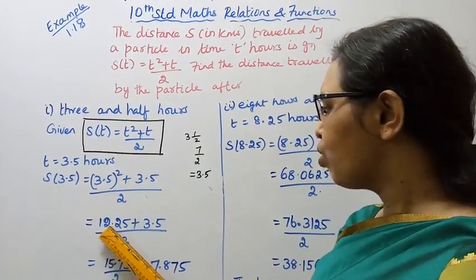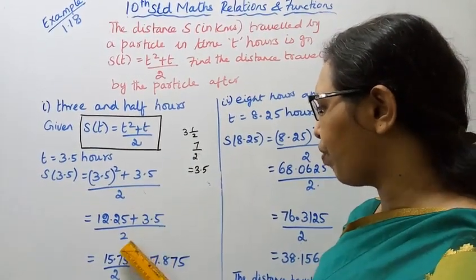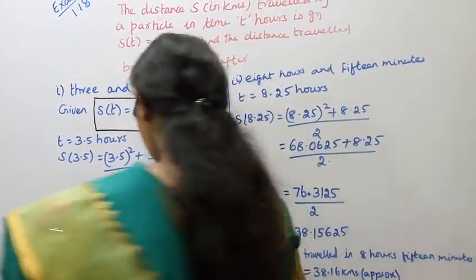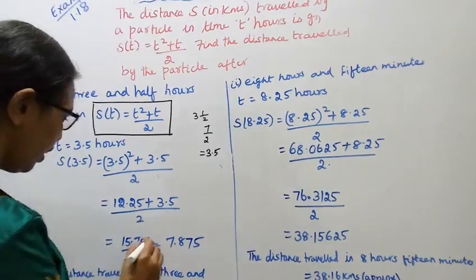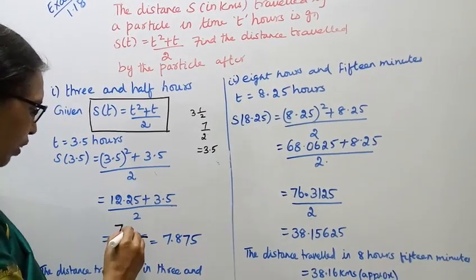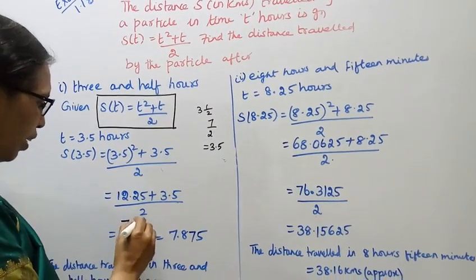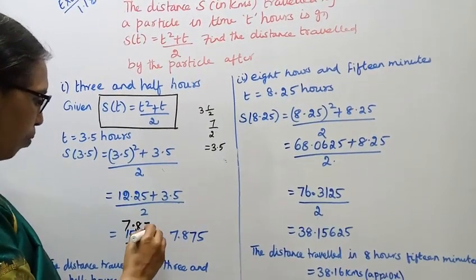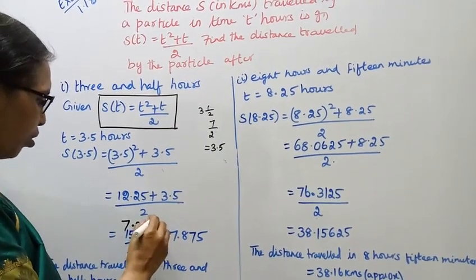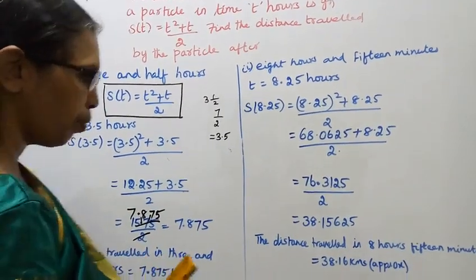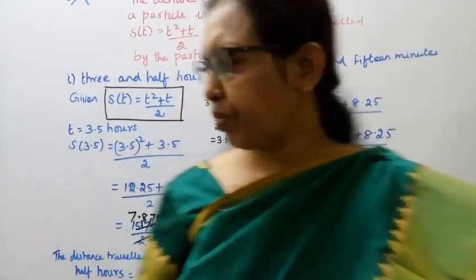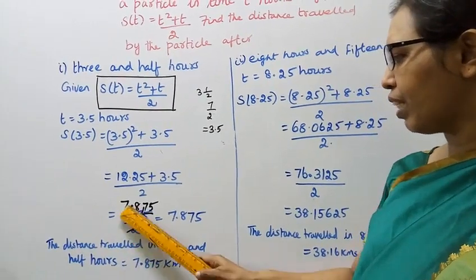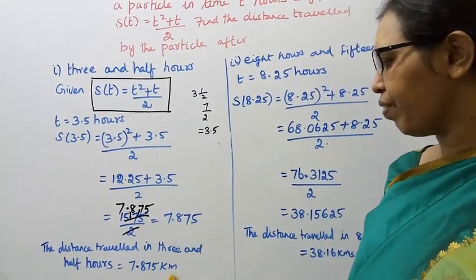So s of t at t equals 3.5 gives 3.5 squared plus 3.5 by 2. 3.5 squared is 12.25, plus 3.5 by 2. Adding these gives 15.75 by 2. Dividing: 7 twos are 14, balance 1; 0.8 twos are 16, balance 1; 7 twos are 14, balance 1; then 10, 5 twos are 10. Result is 7.875. The distance travelled in 3 and a half hours equals 7.875 km.